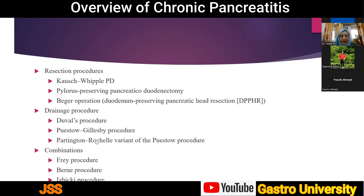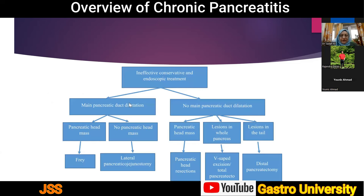Partington-Rochelle's modification opens the pancreatic duct from head to tail, removing all strictures and stones, and creates a lateral pancreaticojejunostomy. Combination procedures — such as the Frey procedure or Berne's modification of the Beger procedure — address the inflammatory mass with coring of the pancreatic head and create one anastomosis. The V-shaped Izbicki excision is another combination option. The choice of procedure depends on whether there is main ductal dilatation and whether a dominant pancreatic head inflammatory mass with extraductal calcification is present.